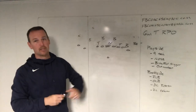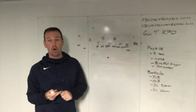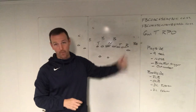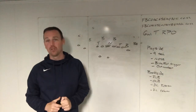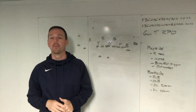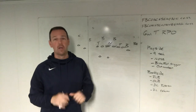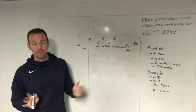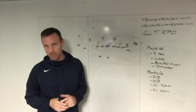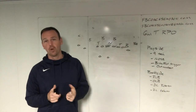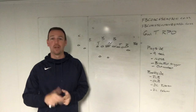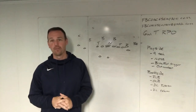We are the Gun T RPO offense, which means we are trying to RPO — run-pass option — or read different things on the backside as solutions to problems. If you want my whole system, it's available. You can go get the playbook at FBCoachSimpson.com, or you can go to CoachTube and see all the different ways we run it with game film and all that.